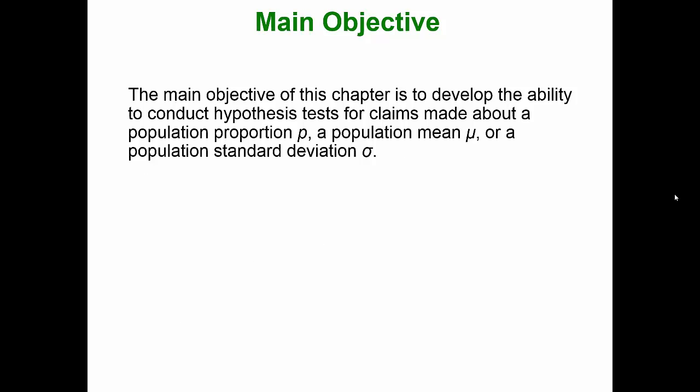The main objective of this chapter is to develop the ability to conduct hypothesis tests for claims made about a population proportion p, a population mean mu, or a population standard deviation sigma.